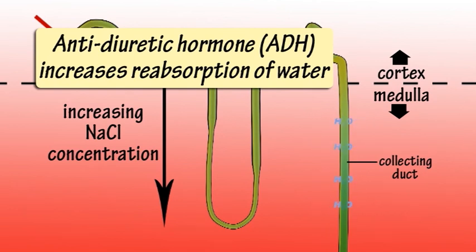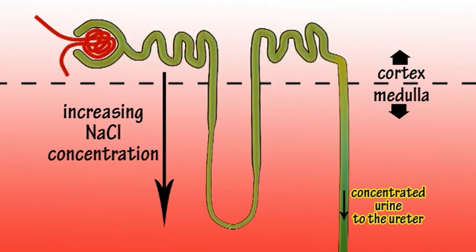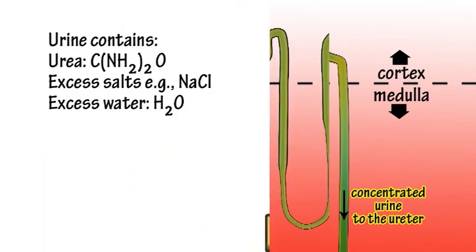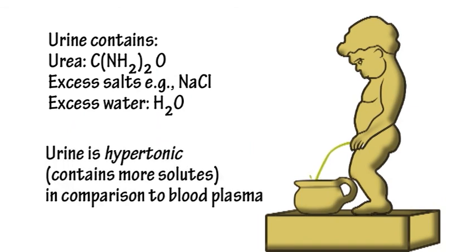Anti-diuretic hormone, or ADH, secreted by the pituitary gland in the brain, can stimulate the kidneys to increase reabsorption of water. What remains at the end of this process is concentrated urine, containing urea, excess salts and water. This urine is hypertonic, containing more solute or dissolved solids in comparison to blood plasma.